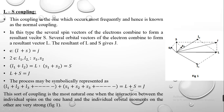In this type of coupling, the several spin vectors of the electrons combine to form a resultant spin vector S, and several orbital vectors of the electrons combine to form a resultant orbital vector L. In turn, the resultant of L and S gives the total resultant J. For example, if we consider only one electron in the atom, the magnetic moment due to its orbital motion is L and the magnetic moment due to spin motion is S, so the net magnetic moment is their vector sum, giving rise to the total magnetic moment J.